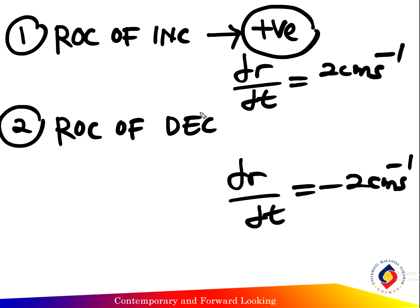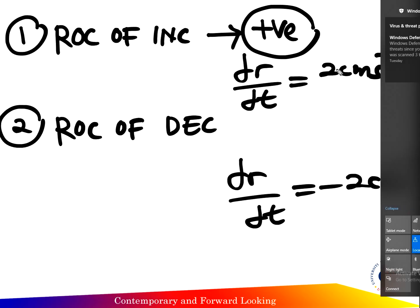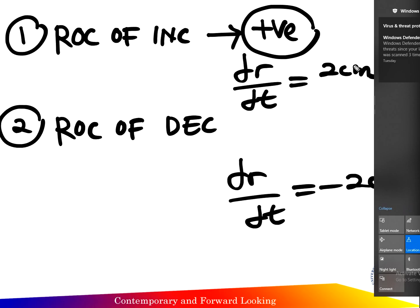The final answer here: rate of increase of the radius — dr over dt equals 2 cm per second. And here you put the positive sign.